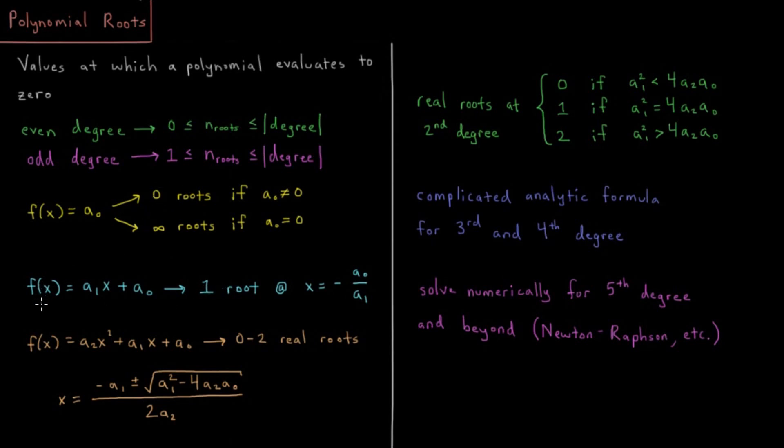Then something that's very familiar to us from algebra, the quadratic equation. If we have a quadratic polynomial, f(x) equals coefficient times x squared plus coefficient times x plus coefficient, that's going to give us somewhere between zero and two real roots, because some of them might be imaginary.